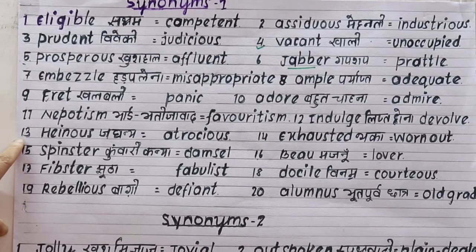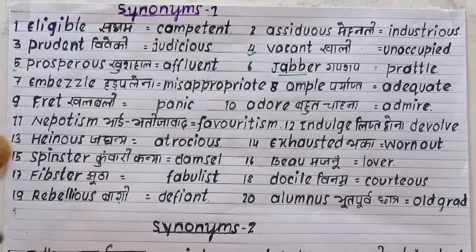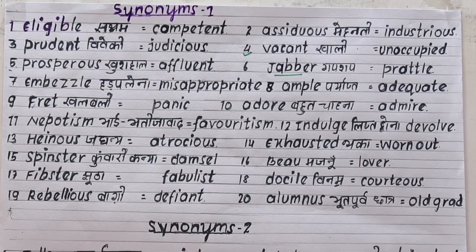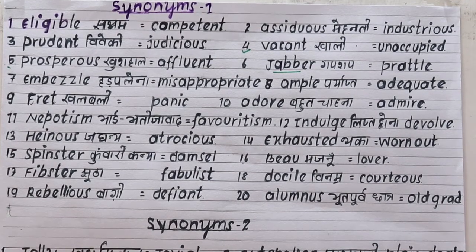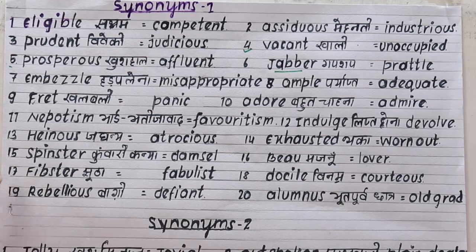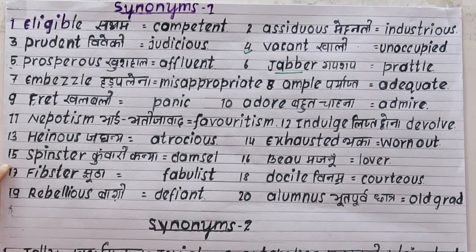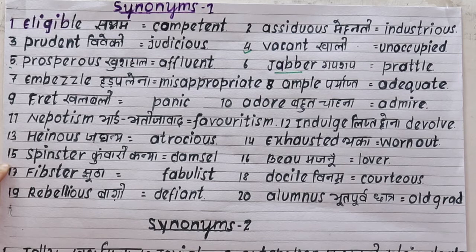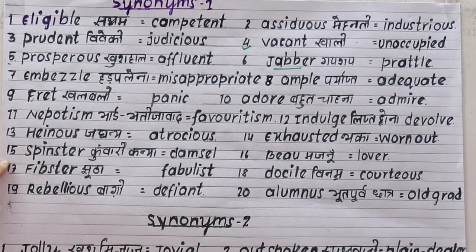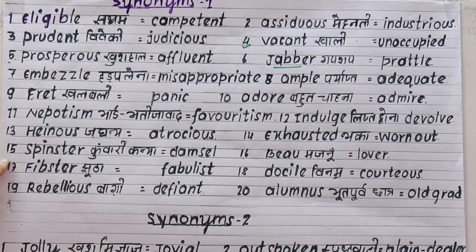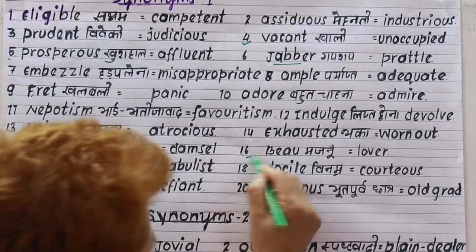Number fourteen is 'exhausted', meaning very tired or worn out. For example: today I am exhausted, I am worn out. Number fifteen is 'spinster', meaning an unmarried girl or lady. The synonym is 'damsel'. For example: my sister is still a spinster — she is a damsel.